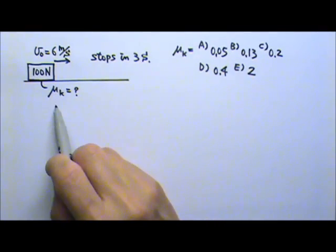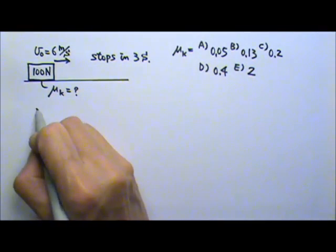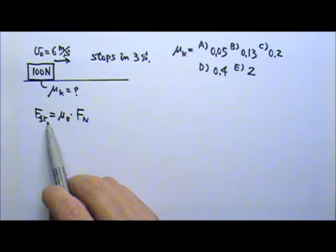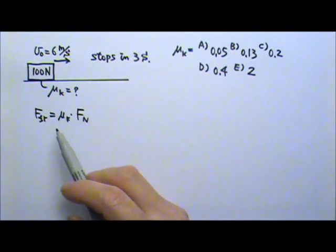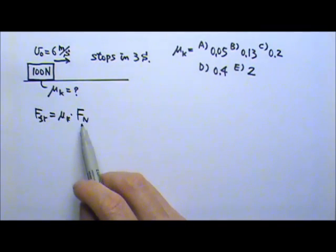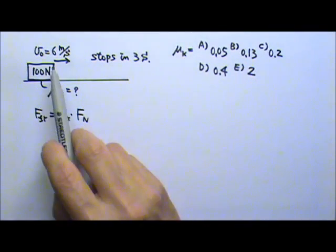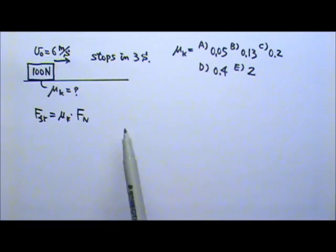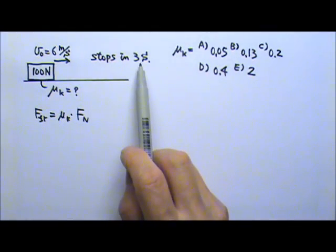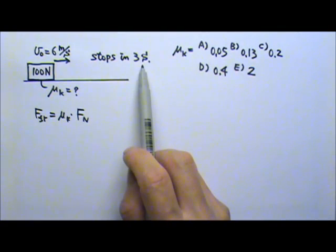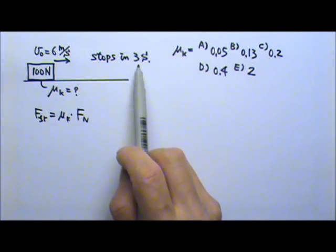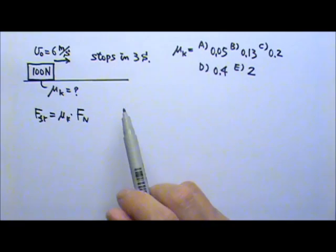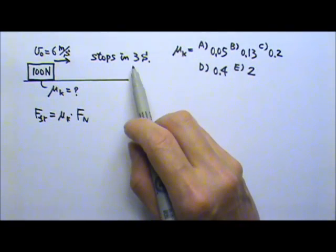Now the only equation we have to use to find μ_k is friction equals μ_k times the normal force. Which means to find μ_k we'll have to find the normal force and the friction, which means we have to do the force diagram and write the force equation. But before that, we'll need some information from these given numbers. The time is given, and in forces we do not have time, but we have time involved in kinematics. So we first have to use kinematics to find something that provides a link between kinematics and the forces.